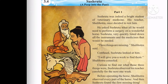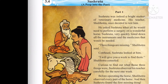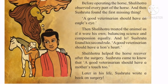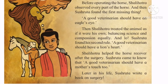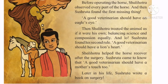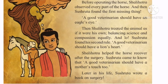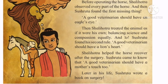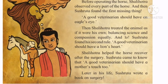Before operating the horse, Shalihotra observed every part of the horse. And then Sushruta found out the first missing thing — a good veterinarian should have an eagle's eye. A good veterinarian should always have an eagle's eye to look at each and every body part of the animal being treated. Then, Shalihotra treated the animal as if it was his own, balancing science and compassion equally.